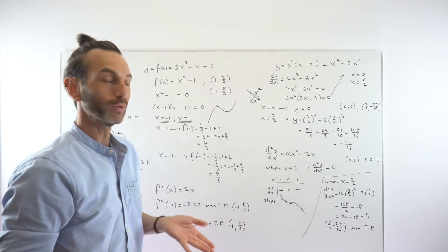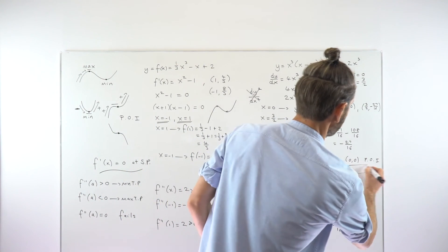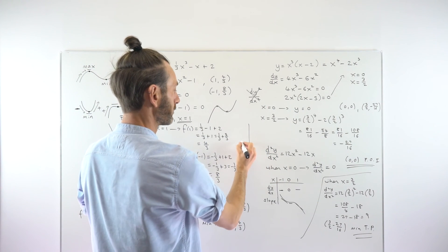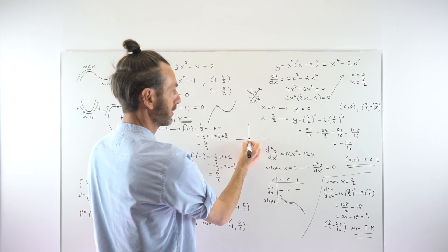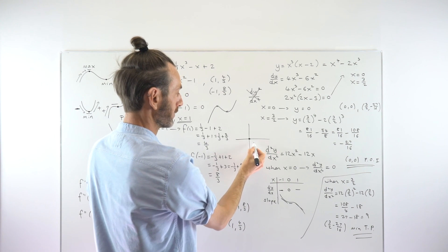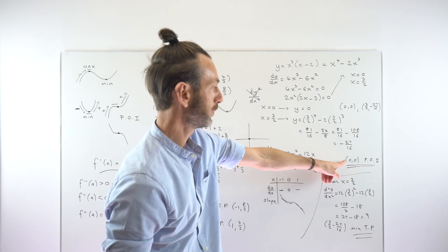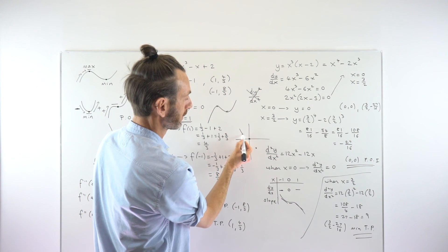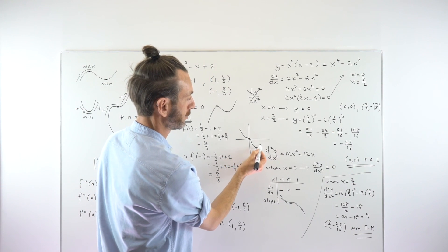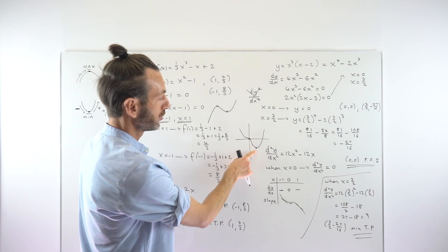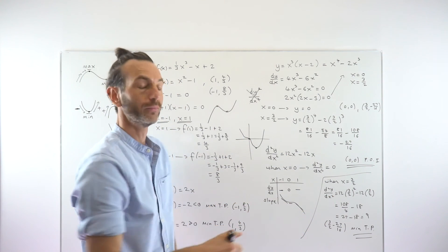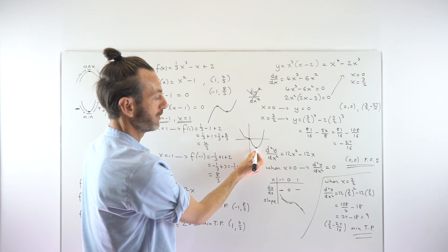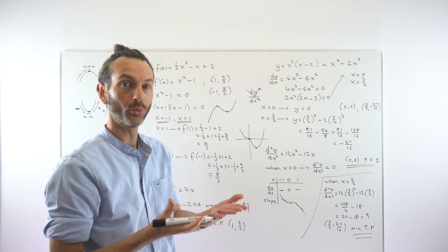If you look at a graph of this function, the results are consistent: there's a point of inflection at (0, 0) and a minimum turning point at (3/2, −27/16). The graph goes down, has its point of inflection, then reaches a minimum and goes back up. Notice the two conclusions are consistent — they allow you to draw a graph that works.